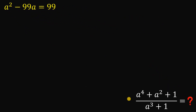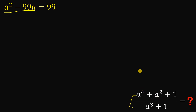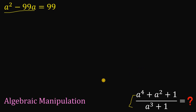So in this question, the goal is to evaluate the expression involving a, given the equation a squared minus 99a equals 99. Our solution here is not to solve for the value of a and then replace all the a's to evaluate the expression. That method works, but in this video we will use what we call algebraic manipulation.